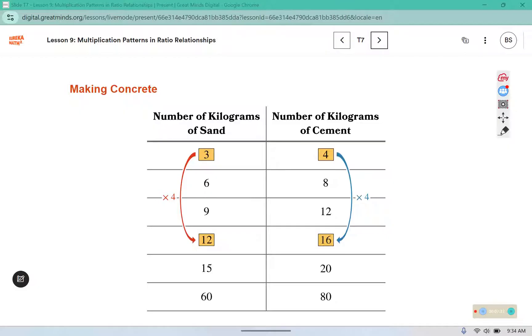If we were trying to figure out how many kilograms of cement Scott would need for 12 kilograms of sand, this is another way that we could have found that extra point. 3 times 4 is 12, and 4 times 4 is 16.